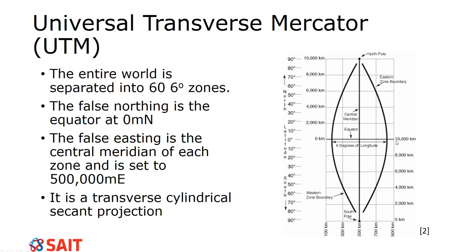Zero meters corresponds to the equator. The videos discuss both north and south in detail, but I am not going to go into detail on the south side - I don't expect you to remember those numbers. If you plan on working in Australia, New Zealand, or anywhere in the southern hemisphere, please review the video for that. For the northern hemisphere, we start at zero at the equator and count northing values all the way up to the north pole.